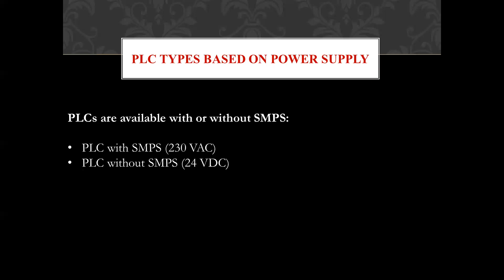Number one: 230 volt AC — some PLCs can be connected to a 230 volt AC power supply directly. This means they have an inbuilt switch mode power supply which converts 230 volt AC into the standard 24 volt DC. Number two: 24 volt DC — some PLCs need 24 volt DC and do not have an inbuilt switch mode power supply. In this case, we need an external switch mode power supply for the conversion of 230 volt AC into 24 volt DC.